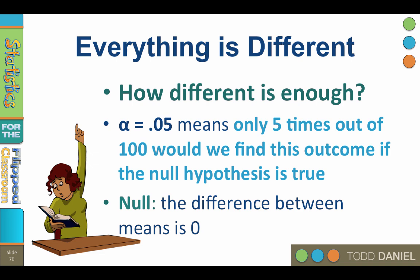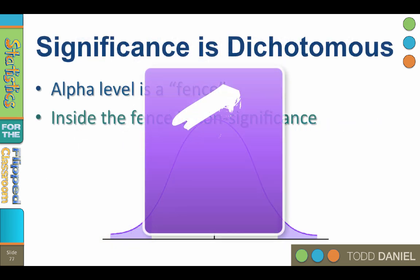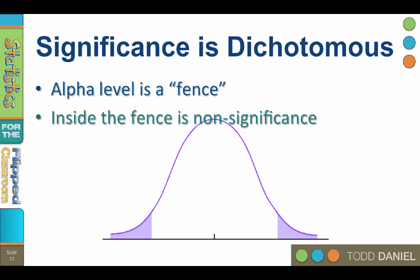So here are some things that you need to understand about the meaning of significance. Number one, significance is dichotomous. Your alpha level is a fence that you set before you begin an experiment. When you say to yourself, if I find differences that cross this threshold, then I am going to believe that those differences were not due to chance. The fence is your alpha level. Inside the fence is non-significance. Only differences that cross that fence are significant.